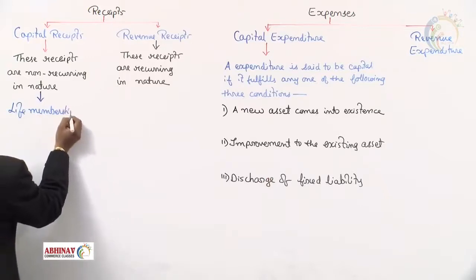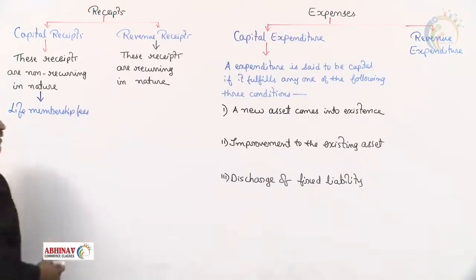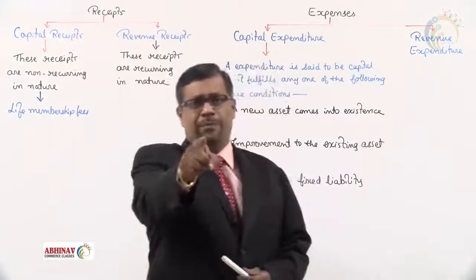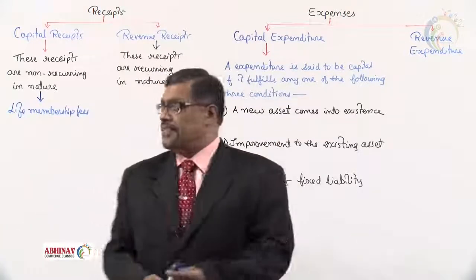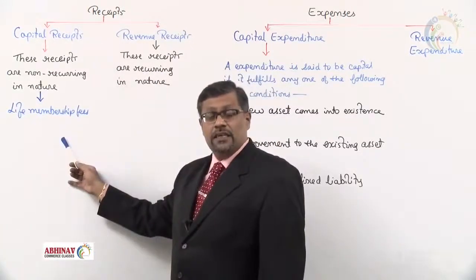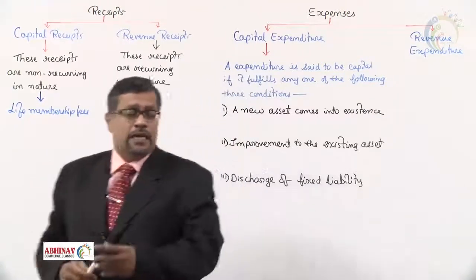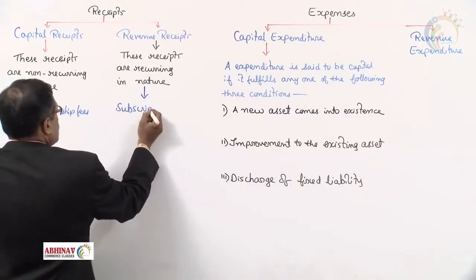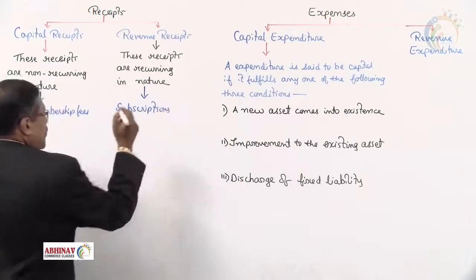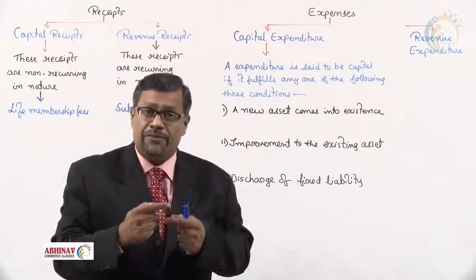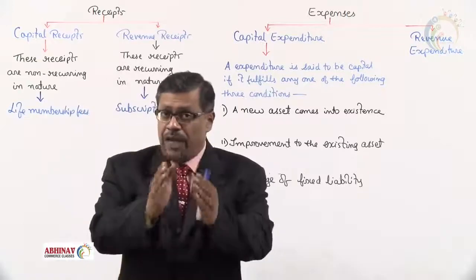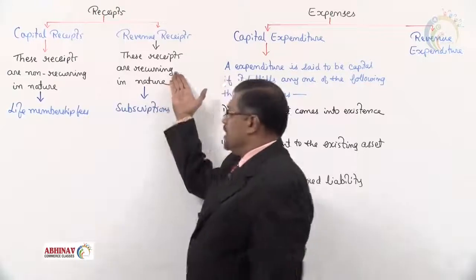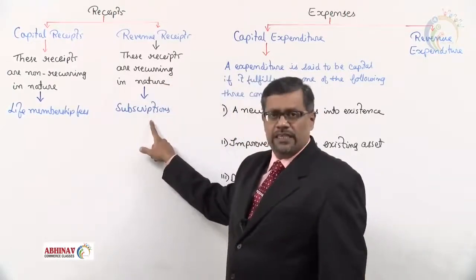Life membership fees — the fees received in lump sum from members — is received only once from that member, so that becomes a non-recurring receipt, that is called a capital receipt. Whereas subscriptions are the annual membership fees received from members; from that person every year we receive the fees, which means it is recurring, so that has to be a revenue receipt.